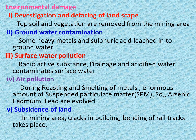Environmental damage includes de-vegetation and defacing the landscape — topsoil and vegetation are removed from the mining area, which is why plants cannot grow there, since topsoil and subsoil are very important for plant growth. Groundwater contamination also occurs as heavy metals and sulfuric acid leach into the groundwater.